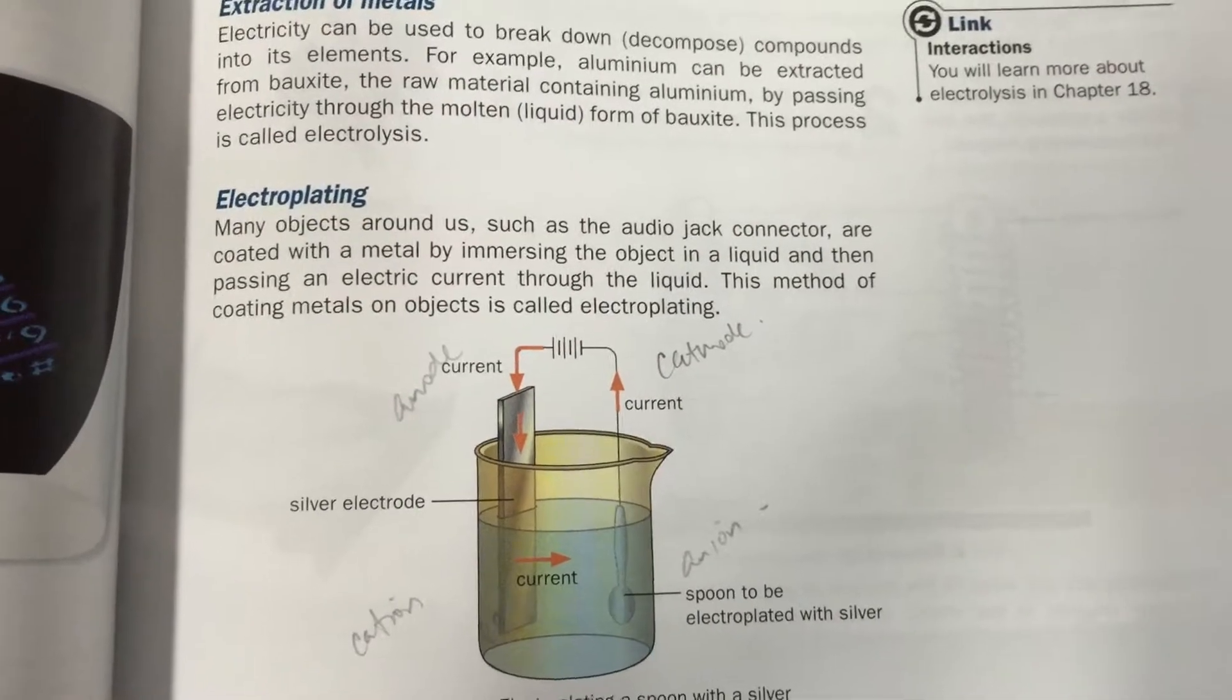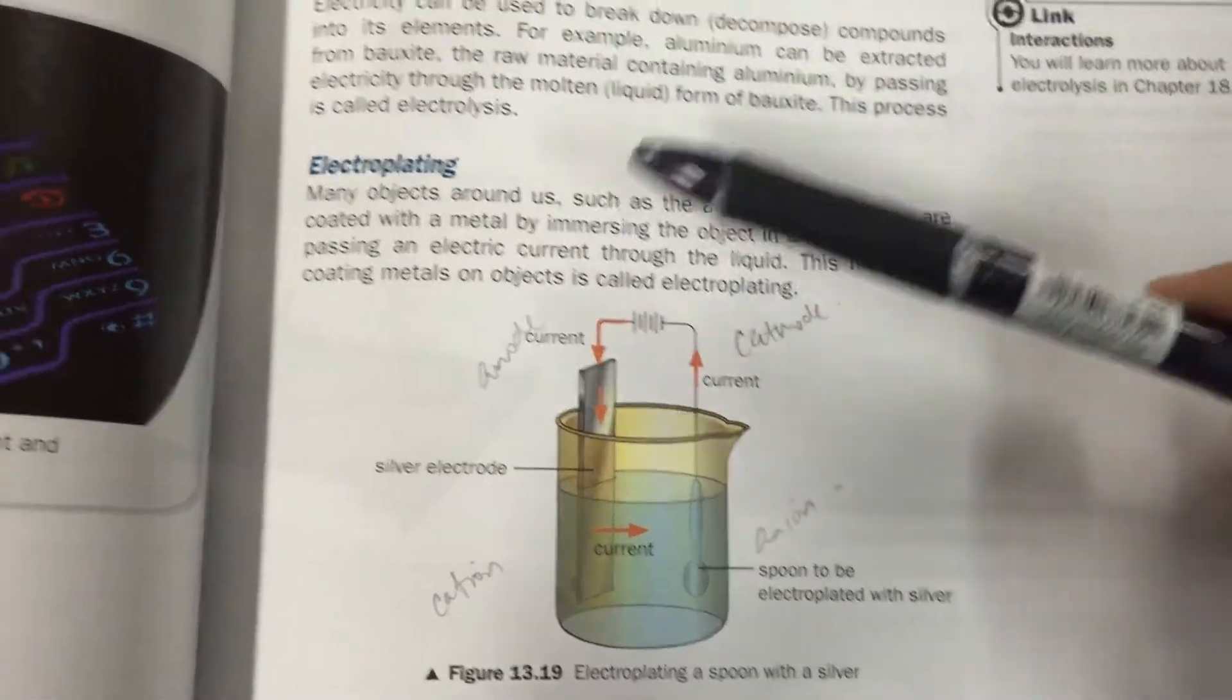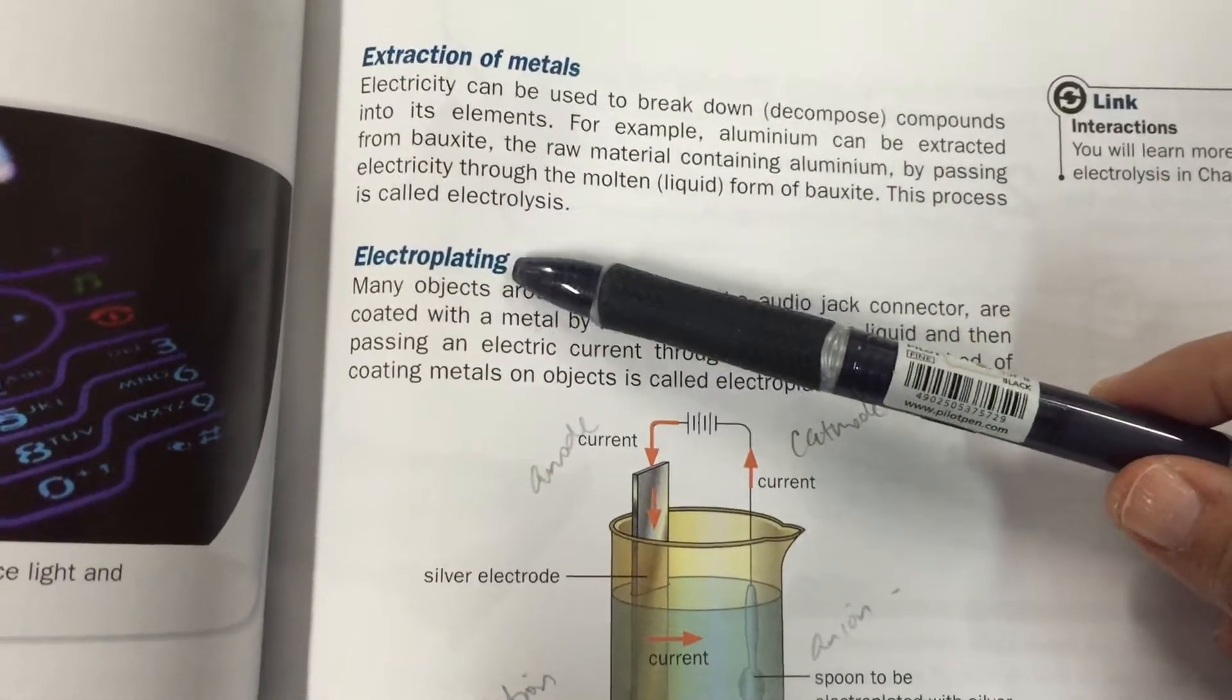Now, in this chemical effect of an electric current, we'll see down here that one of the things that we use is electroplating.